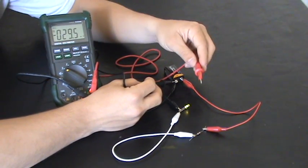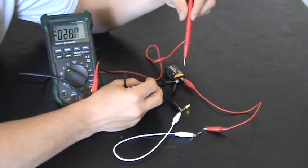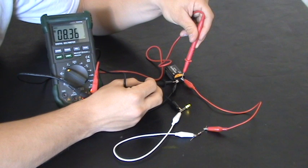So, go ahead and touch the red one to, you can touch it. And let's go ahead and test the battery first. Touch it to the positive part on your battery. And if you can't see, we're getting a reading now of 8.35 volts.